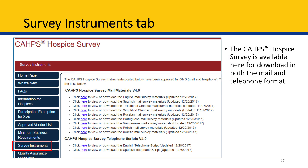Next, we have the Survey Instruments tab. On this page, the complete CAHPS Hospice Survey is available for download, including the CAHPS mail survey materials in multiple languages and the telephone survey scripts in two languages, English and Spanish. Although your survey vendor will administer the survey, it is important that you become familiar with the survey to understand the questions that bereaved caregivers and family members are asked and to understand how quality at your facility is assessed.